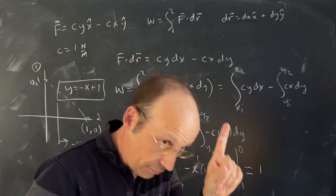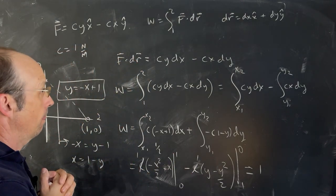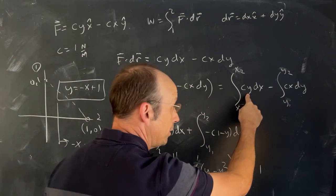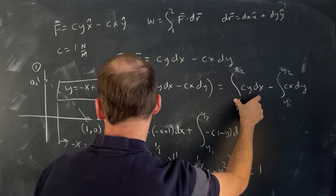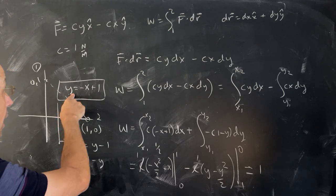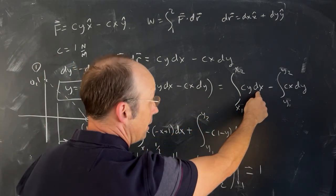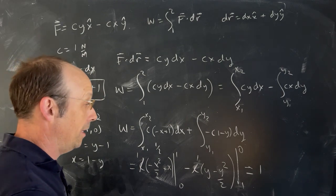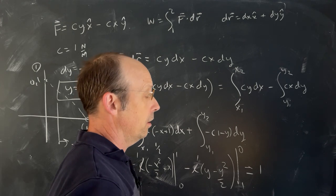There is another way to do this and you should get the same thing. Instead of substituting in for y, you could find dx in terms of y to convert everything into a y integral. If you take the derivative of the path equation y = -x + 1, you get dy = negative dx, so you can replace dx with negative dy. You'd then change the limits of integration accordingly and get the same answer.